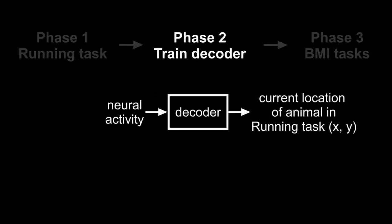In phase two, we trained such a decoder, then combined it with a fast neural signal processing system, giving us a real-time end-to-end hippocampal brain machine interface.